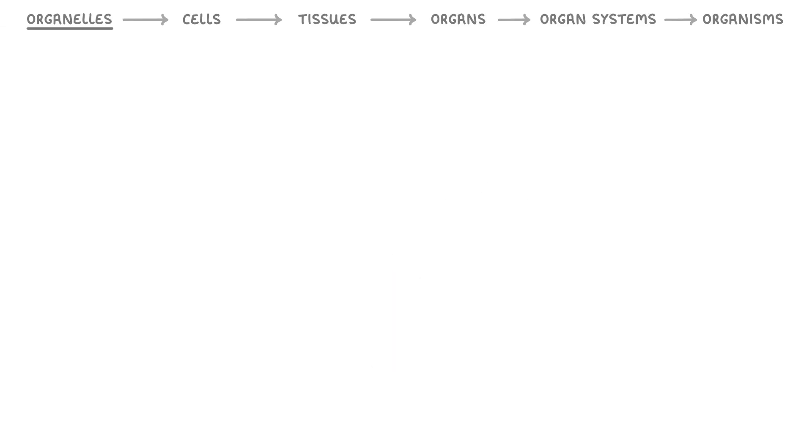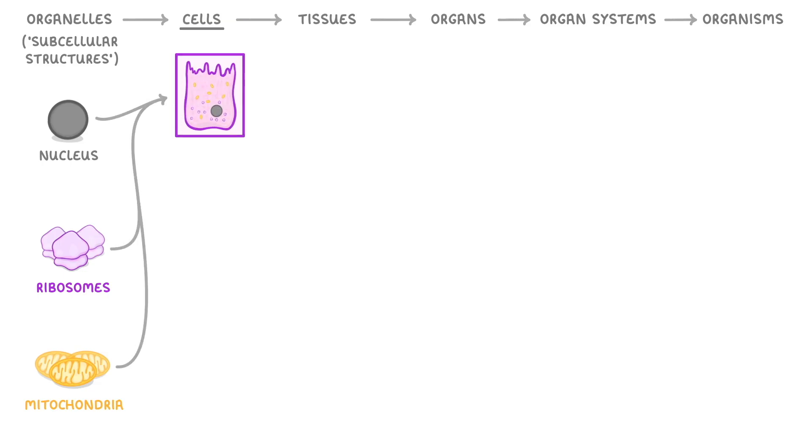Let's start with organelles, which are also called subcellular structures. These are the parts that make up a cell, like the nucleus, ribosomes, and mitochondria. Each individual organelle has a specific role to play, and when combined, multiple organelles will form a single cell.